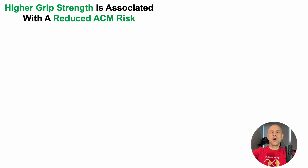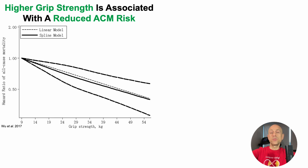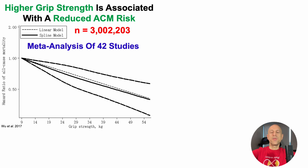In an earlier video, we saw that having a higher grip strength was associated with a lower risk of death for all causes, or ACM risk, and that's what we'll see here. This is a meta-analysis of 42 studies that included more than 3 million people. On the y-axis, we've got the hazard ratio of all-cause mortality, or risk of death for all causes, plotted against grip strength in kilograms.